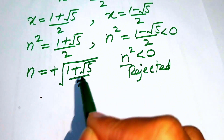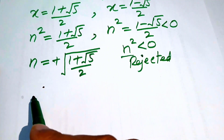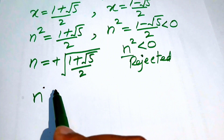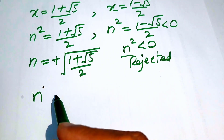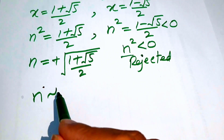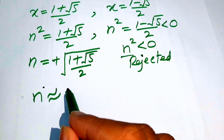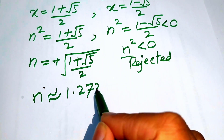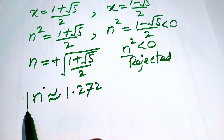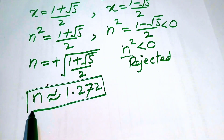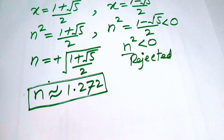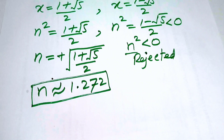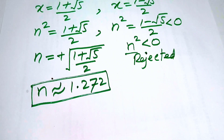Taking the positive square root of (1 plus √5)/2 and using a calculator, we approximately get n equals 1.272. This is our final answer. Thank you so much for watching this video — please subscribe to my channel for more exciting videos.